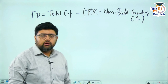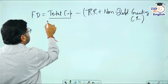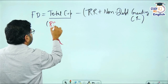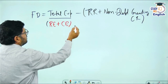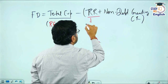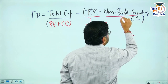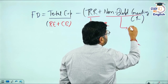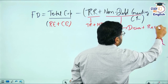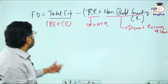If you have seen my previous video on components of the budget, total expenditure is revenue expenditure plus capital expenditure. Revenue receipts are tax revenue plus non-tax revenue. Non-debt creating capital receipts are disinvestment plus recovery of loans by the Government of India. This is what your fiscal deficit formula covers.